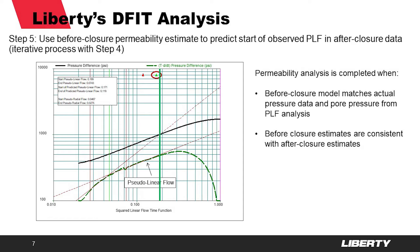The green vertical line is the start of pseudo-linear flow, and in the red circle you will see a small green triangle — that is the predicted start of pseudo-linear flow from the before-closure estimate of permeability, along with a rough half-length that we also get from that. When that triangle matches up with the expected or observed green line, we have a good fit of the before and after-closure data.